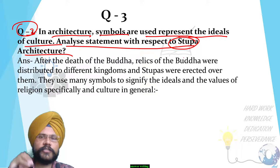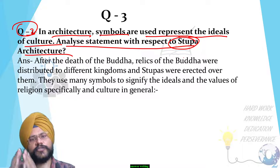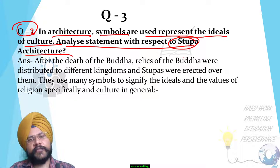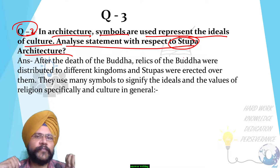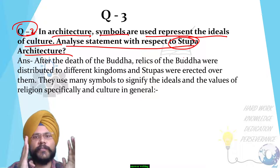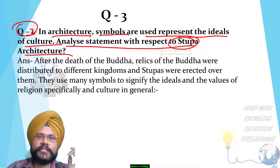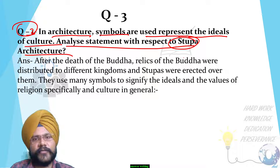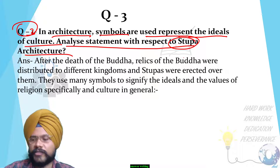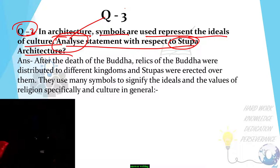The basic theme of the question is: we have to analyze the symbols and how they represent culture. The specific topic here is stupa architecture — how the symbols used in stupa architecture are connected with culture. This is the meaning of the question. The directive is 'analyze the statement.'